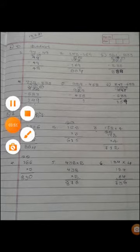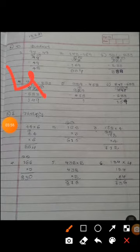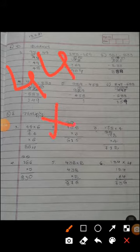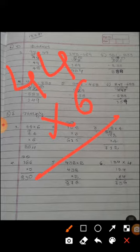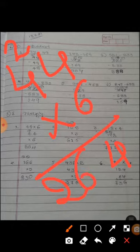First one, 44 can be multiplied with 6. 6 fours are 24. 2 can take a carry. Then 4 down. 6 fours are 24, plus 2 it become 26. The answer is 264.